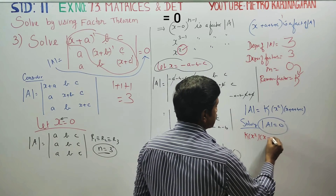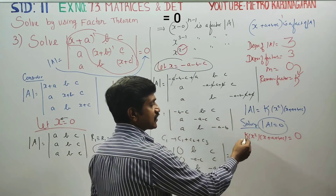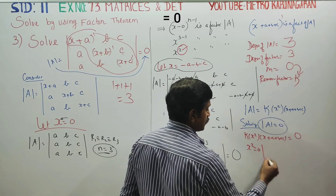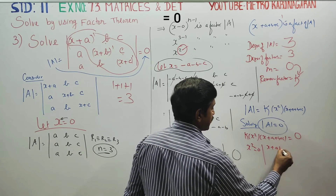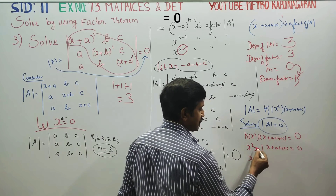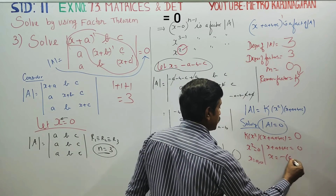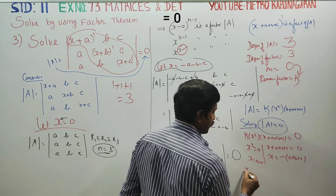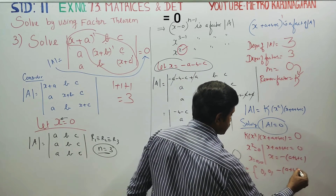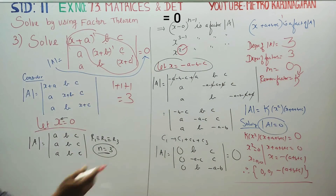Therefore, x squared times (x + a + b + c) equals 0. Since k is a constant equal to 1, we get: x squared equals 0 giving x equals 0 (double root), or x + a + b + c equals 0 giving x equals minus (a + b + c). Therefore, the solution set is {0, 0, minus(a + b + c)}. This is the answer.